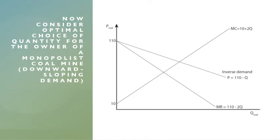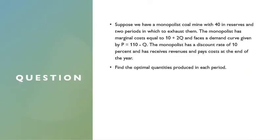Suppose we have a monopolist coal mine with 40 units in reserves and two periods in which to exhaust them — the same problem as before but now it's a monopolist. The monopolist has a marginal cost equal to 10 plus 2q, and faces a demand curve given by 110 minus q. The monopolist has a discount rate of 10% and receives revenues and pays costs at the end of the year. Let's find the optimal quantities produced in each period.